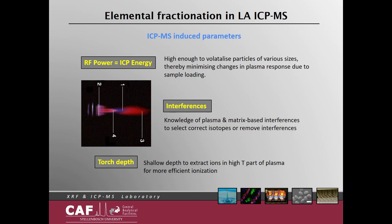Looking at ICP-MS induced parameters that can lead to elemental fractionation: firstly, the RF power should be high enough to volatilize particles of various sizes, thereby minimizing changes in plasma response due to sample loading. Secondly, interferences on analytes can cause incorrect results — one needs to have knowledge of plasma and matrix space interferences to select the correct isotopes or remove interferences. Thirdly, shallow torch depth is best for optimal ionization of all elements and particle sizes in the sample.